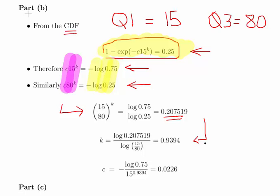You might have done them in first year mathematics, but you have to sort of keep up to date with the laws of logarithms and so on. So get the log of both sides, and that is log of 0.207519 divided by log of 15 over 80. That is 0.9394. So K is equal to 0.9394.